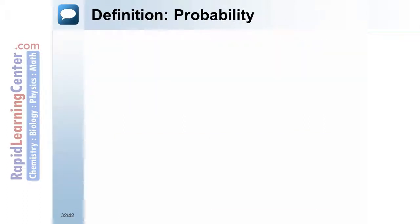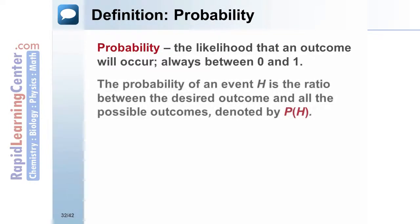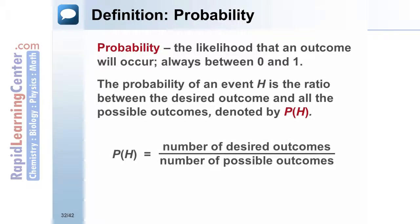Definition: Probability. Probability is the likelihood that an outcome occurs and is always between 0 and 1. The probability of an event H is the ratio between the desired outcome and all the possible outcomes.